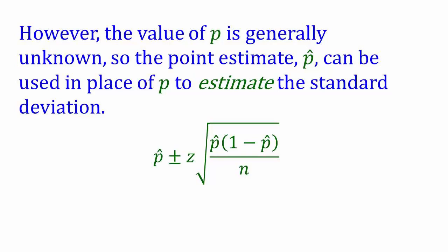So what we need to do is estimate the standard deviation by replacing p with the best estimate we have of p, which is p hat. That's why we've got the p hats under the square root sign rather than the p's.